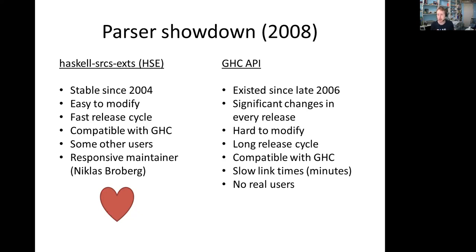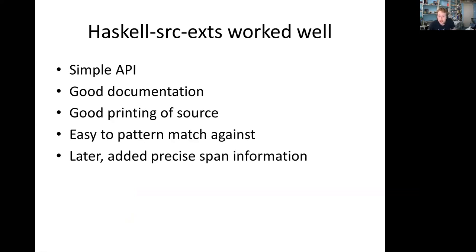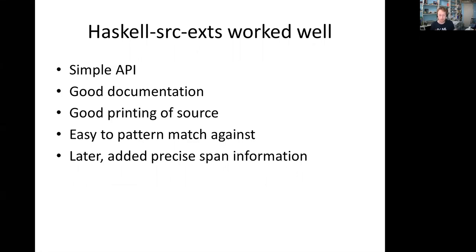Haskell Source Extensions worked really well. It has a simple API, good documentation. It's essentially a big data type describing Haskell, with examples of the syntax that produces each constructor alongside it. You could print out the source, pattern match against it — and given how HLint works, it's maybe 90% pattern matching, so that was really handy. Later, as a Summer of Code project, they added precise span information, so we could round-trip and give really good information to users.